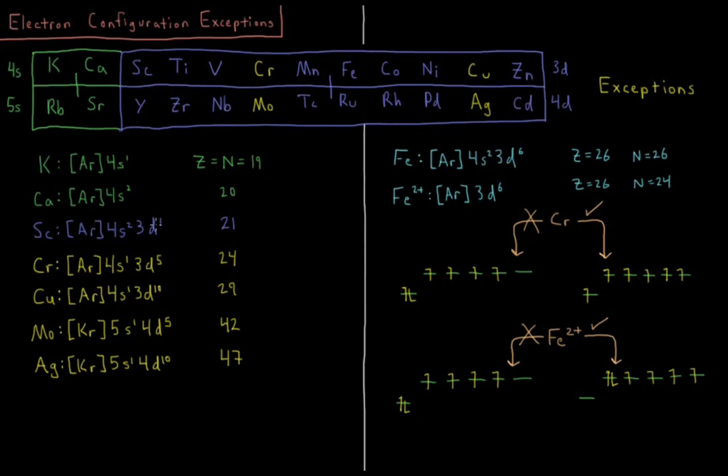Scandium is argon-4s2-3d1, and then that pattern continues until you get to chromium. At chromium, you have argon-4s1-3d5. One of the electrons which was in the 4s shell has been promoted up to the 3d shell, and that's so that we can have a half-filled 3d shell. There apparently appears to be some kind of energetic preference for having half-filled subshells, which is big enough that it promotes this 4s electron up from being 4s2 to making a half-filled d subshell.